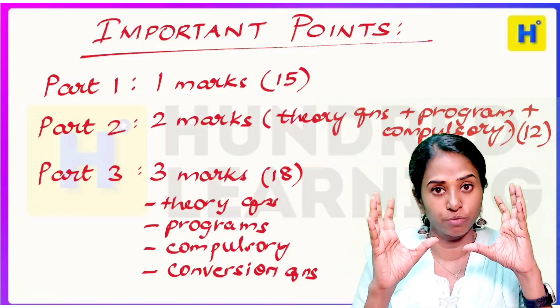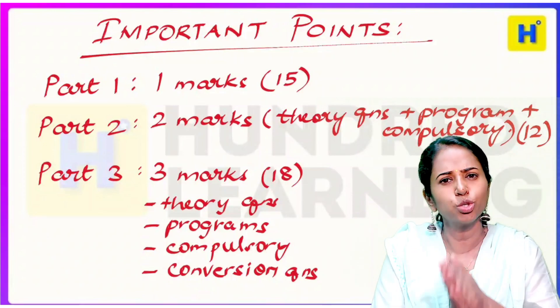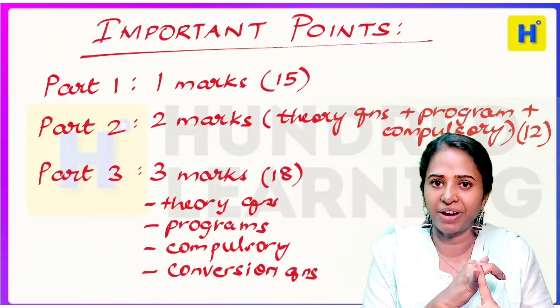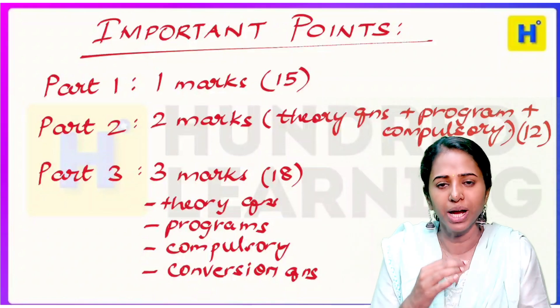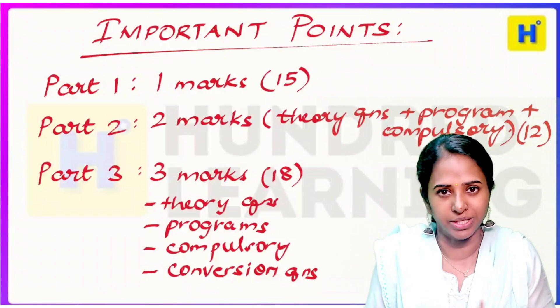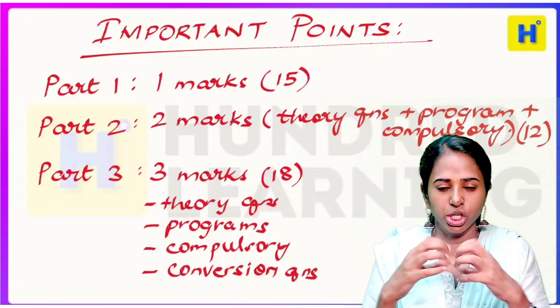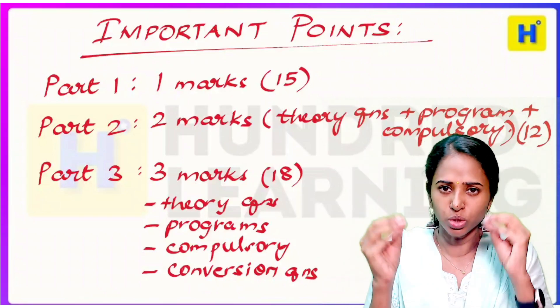Part 1 has 15 one mark questions. Part 2 has 12 marks total, with two marks type questions. These are theory based questions and program related questions, like define computer networks, microprocessor, and other logic related questions, plus compulsory questions.